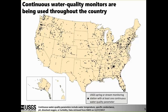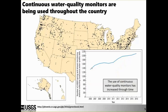The use of these monitors is increasing through time. Those increases are occurring because the technology is becoming cheaper, we can measure a broader range of constituents, and the applications are being realized as valuable. The number of USGS monitoring locations grew from about 1,300 stations with continuous data in 2006 to about 2,100 different stations today.